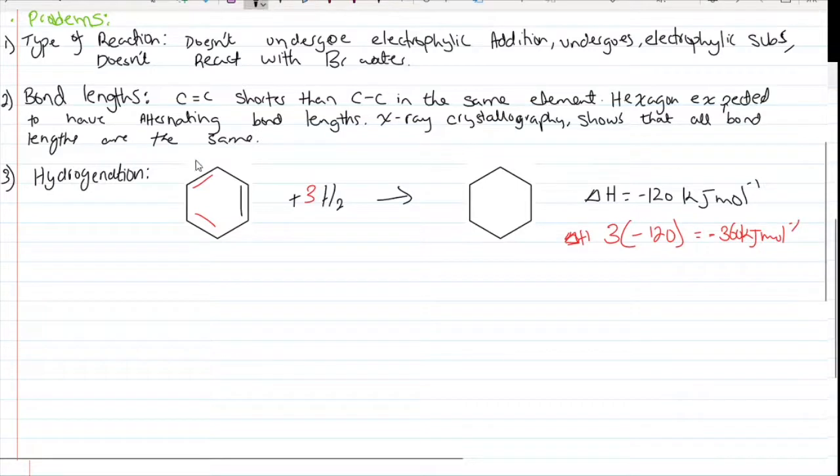However, the actual enthalpy is minus 208 kilojoules per mole. This means that Kekulé's model is more stable than expected. To be precise, it's actually 152 kilojoules per mole more stable than expected.